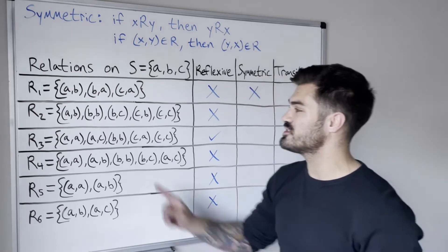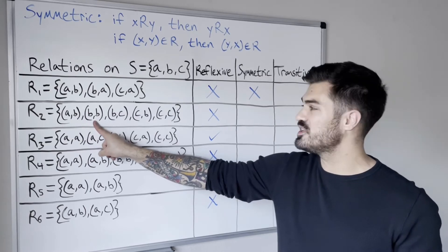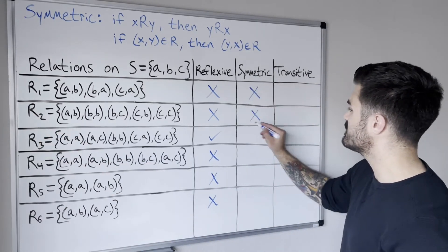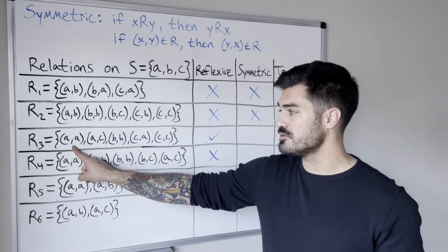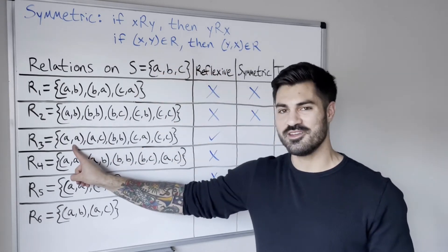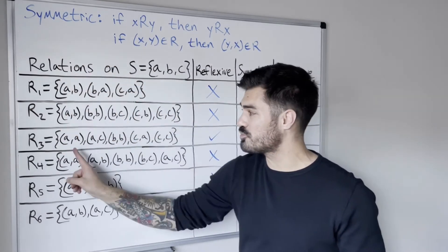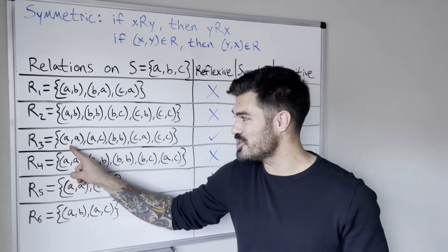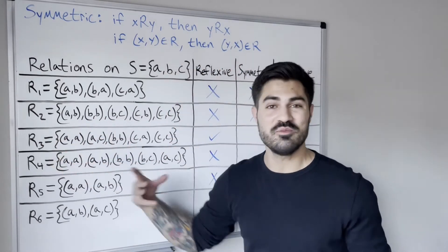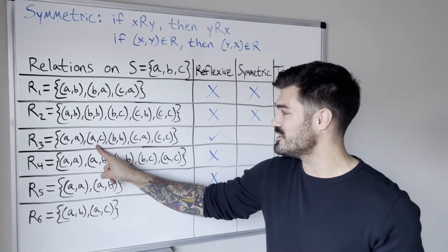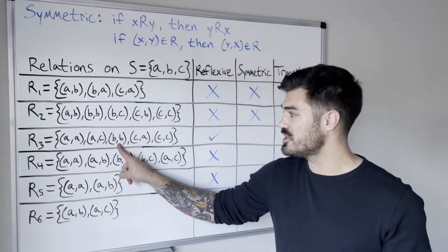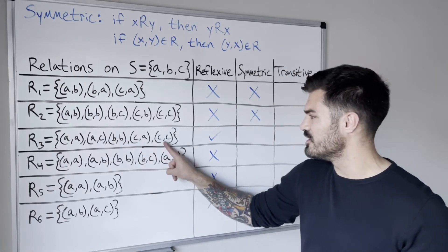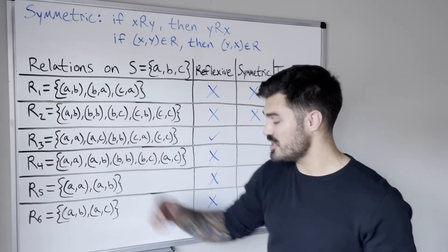Relation two: we have (A,B) but we don't have (B,A) — so not symmetric. For relation three: when we check (A,C), we need (C,A), which we do have. Note that ordered pairs like (A,A) don't need checking since the reverse is itself. After checking all relevant pairs, relation three is symmetric. Relation four: we have (A,B) but not (B,A) — not symmetric.